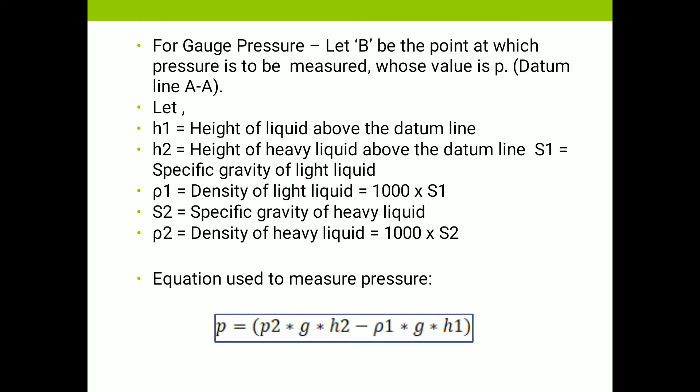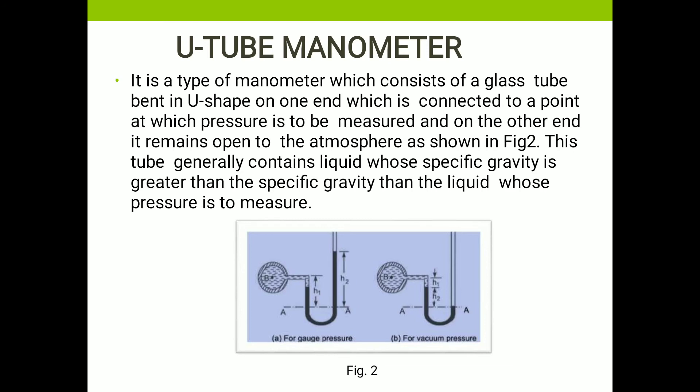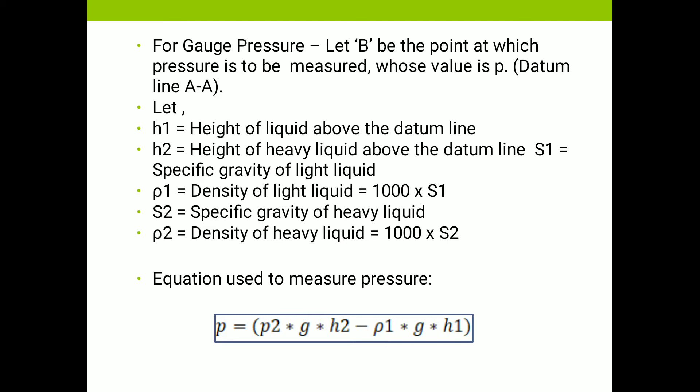For gauge pressure, let B be the point at which pressure is to be measured, and A-A is the datum line. H1 is the height of the liquid above the datum line; H2 is the height of the heavy liquid above the datum line. S1 is the specific gravity of the light liquid, so ρ1 (density of light liquid) = 1000 × S1. S2 is the specific gravity of the heavy liquid, and ρ2 (density of heavy liquid) = 1000 × S2.